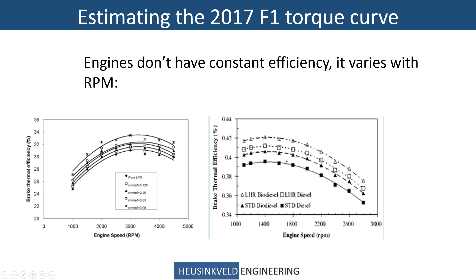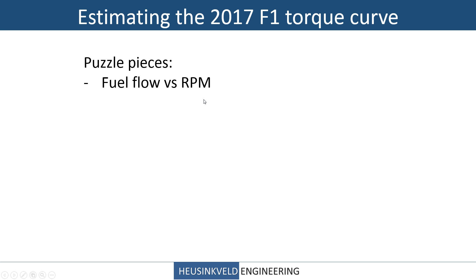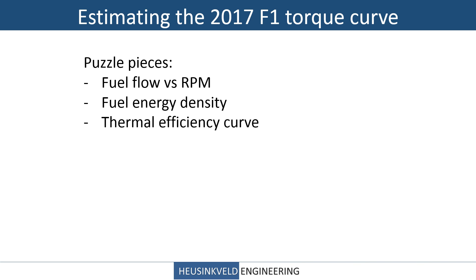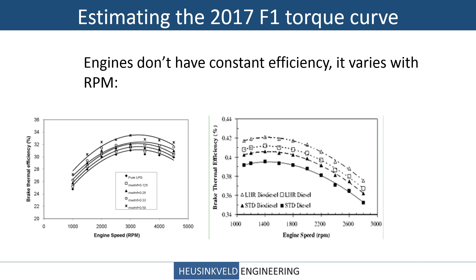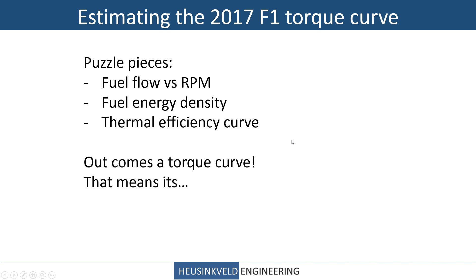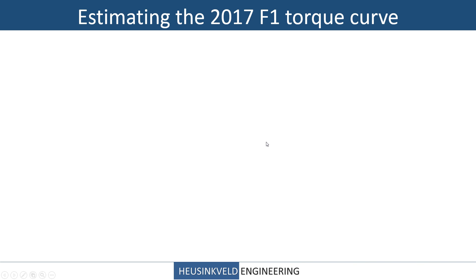These are some curves I found on the internet, with efficiency at about 28% at a low RPM, rising to 34-ish percent at medium RPM, and then dropping again. Diesel engines are more efficient, but they also have this kind of curve. This made me think: we have the fuel flow with RPM, we know the energy density of the fuel — at least a ballpark figure — and we can create one of those thermal efficiency curves. Then we have enough puzzle pieces to construct a torque curve, meaning it's spreadsheet time!